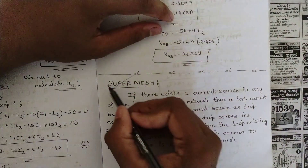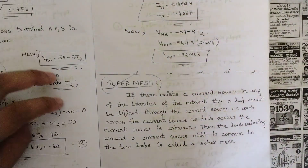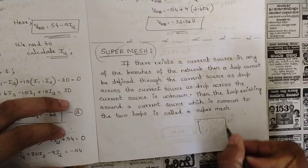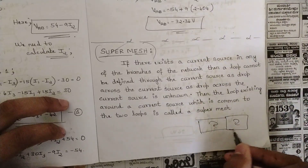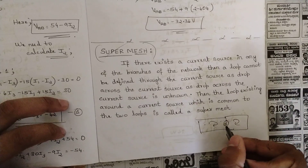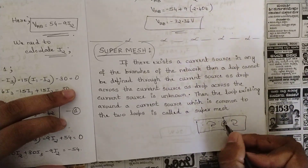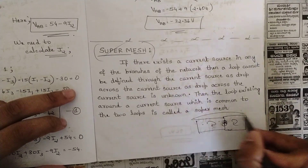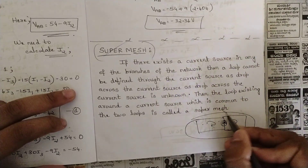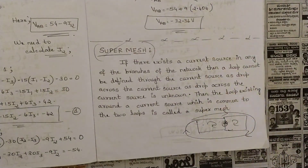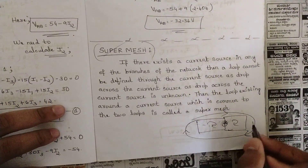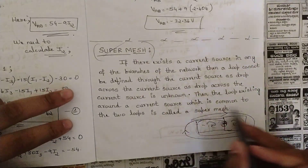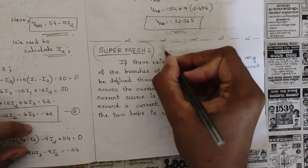Now let's get to one more concept under mesh analysis — that is super mesh. What is super mesh? In simple words: whenever we have two loops and there is a current source between those two loops, those two loops combine together to form a single loop. This is the simple concept of super mesh — nothing much rocket science.